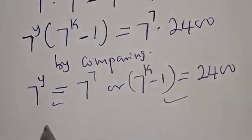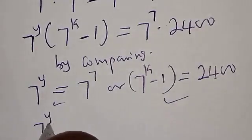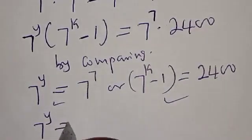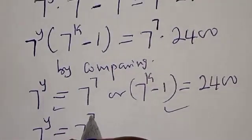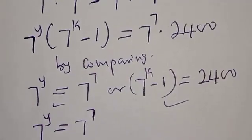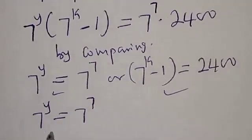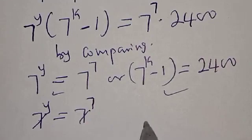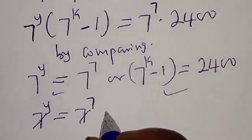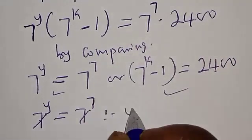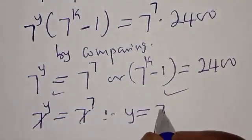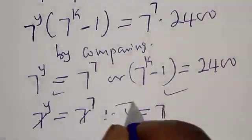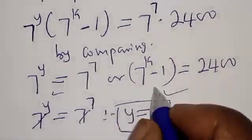For Case 1, we have 7 raised to power y equal to 7 raised to power 7. Since they have the same base, the bases cancel. Therefore y is equal to 7. We have gotten the value of y to be 7.